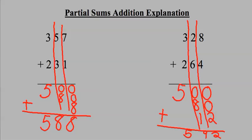328 plus 264 is 592. Thanks for joining us today for our partial sums addition lesson. If you have any questions, please see your teacher.